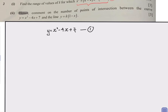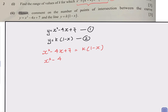Setting equation one equal to equation two and solving simultaneously. Tidying this up gives x squared minus 4x plus 7 equals k minus kx. We then subtract k and add kx to both sides to make the right-hand side zero.